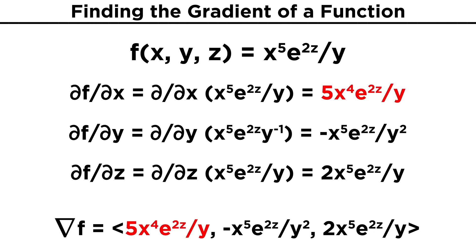This gives us the gradient vector: five x to the fourth times e to the two z over y, negative x to the fifth times e to the two z over y squared, and two x to the fifth times e to the two z over y. You may have noticed during this lesson that we have been using our variables x, y, and z inside of vectors. We'll be discussing this concept in depth when we discuss vector fields in a moment, and we will also be discussing more uses of del. But first, let's check comprehension.